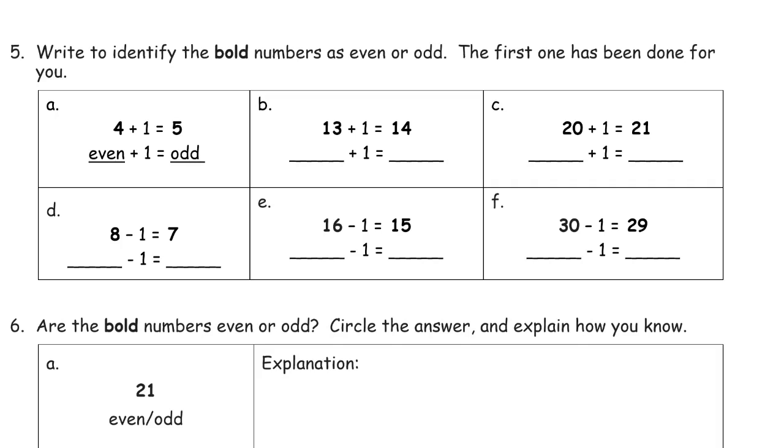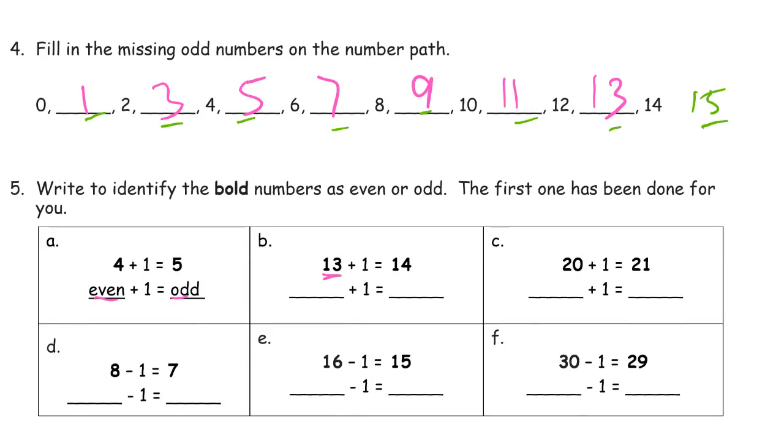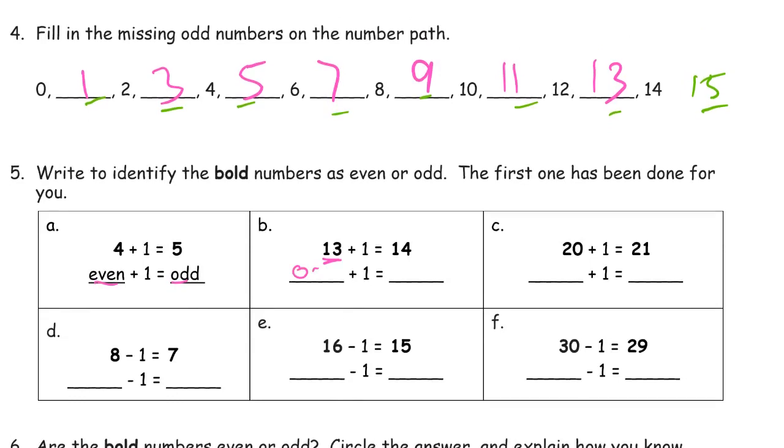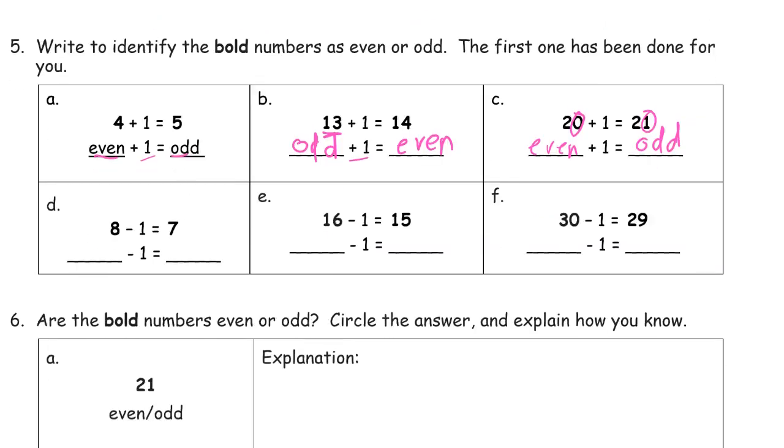Write to identify the bold numbers as even or odd. The first one has been done for you. So we're looking, we're just writing in even or odd. So we see that 13, these are odd numbers and 13 is one of them. So 13 is odd. And 14 is even. This is even. And that's odd. Because we're just looking at the 1s place digits to see if it's even or odd. That's kind of the easy way to do it. So that's even. And 7 is odd. Looking at 16, that 6 makes it even. And looking at 15, that's odd. Looking at 30, right? 0s are even. And 9s are odd.